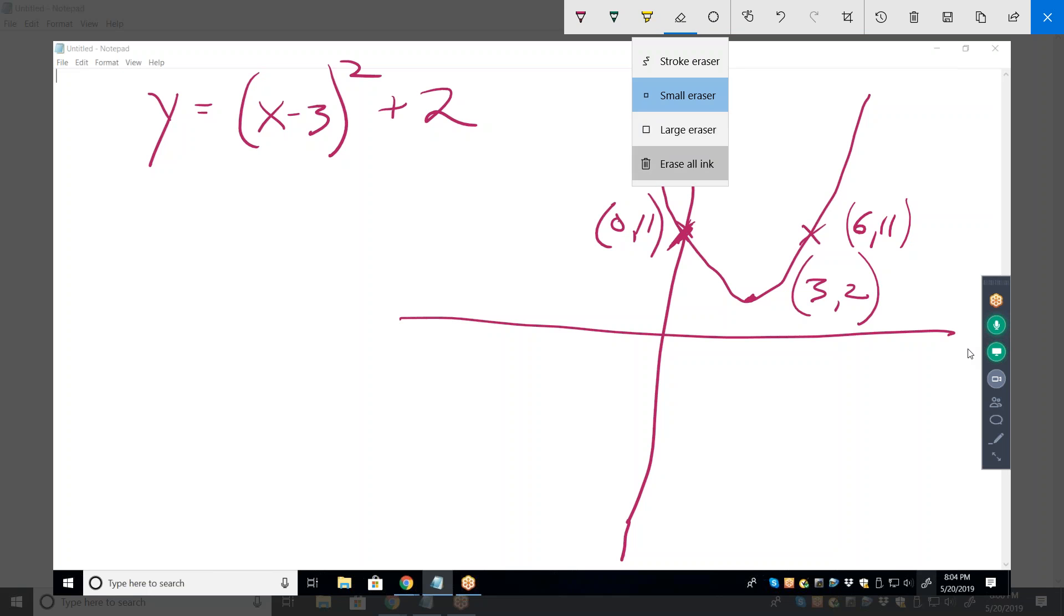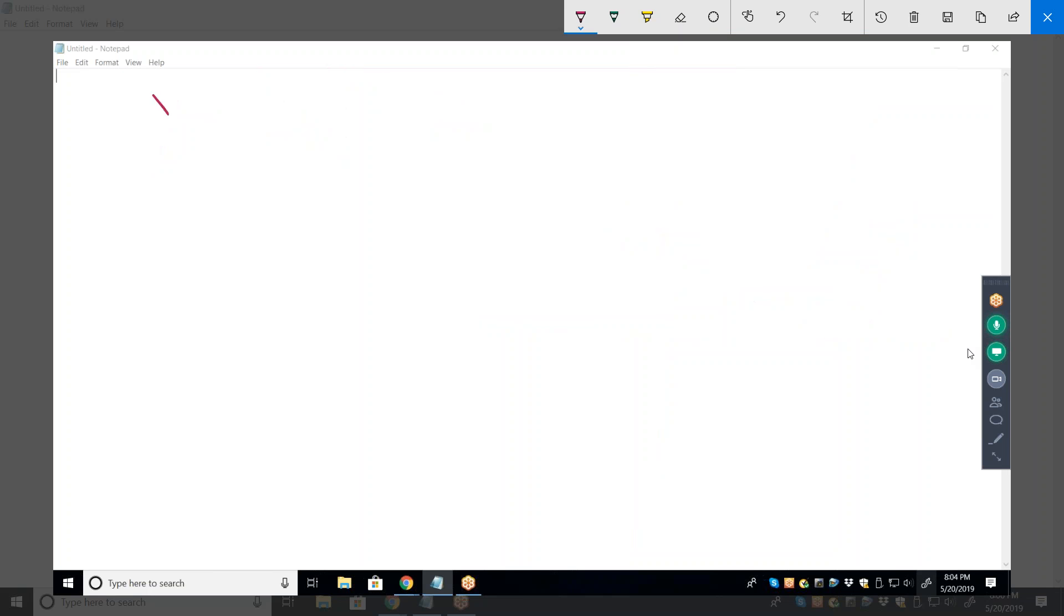So, y equals radical x minus 2, all in the radical. And then, outside the radical, minus 4. Okay, on these, you need to know the parent function. Mm-hmm. What is it? I forgot.